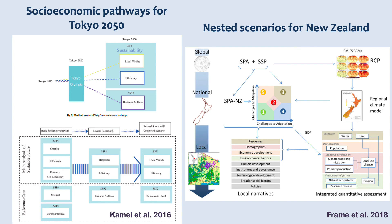These two studies highlight work using RCPs and stakeholder processes to develop socioeconomic pathways for Tokyo in 2050, and scenarios being used in New Zealand to inform priorities for research investment and decisions. There is a lot of other work being done at this scale — from the city to the national scale — in urban areas to look at the kinds of interactions between our development and climate change.